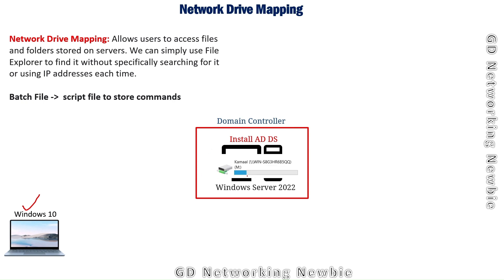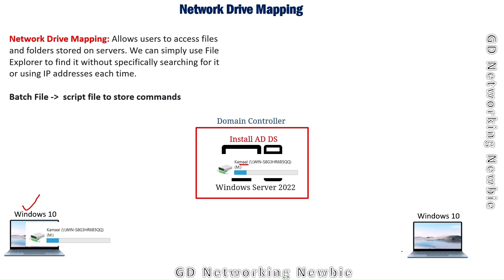After drive mapping, for example I'm going to map a drive with a label, and we enable certain users to see and access this drive. Once they log in to the client machine they can see exactly the same drive. There can be multiple other computers from where users can log in with their credentials to see that network mapped drive.